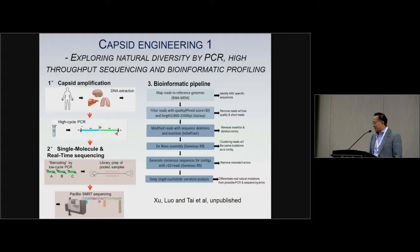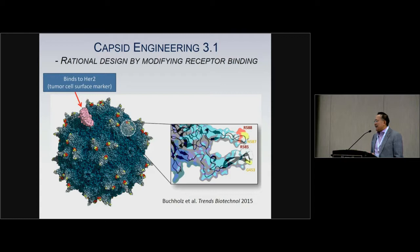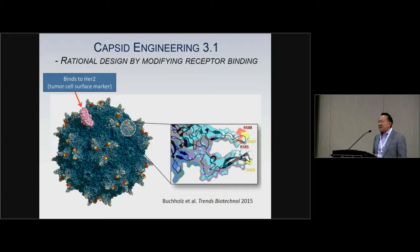The second approach is capsid engineering by directed evolution. This field has been driven and fueled by this kind of strategy, and many capsids have been generated this way. Another approach is rational design — one article demonstrates how to decorate or graft AAV capsids with a receptor to direct specific tumor tropism. This is definitely one direction for using AAV in cancer gene therapy and other applications.